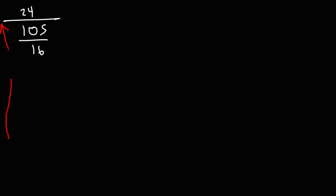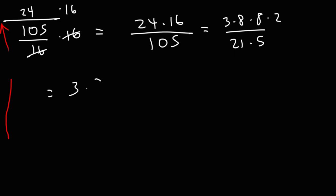So now we're at our last fraction. So we're going to multiply the top and bottom by 16. And so we have 24 times 16 over 105. Now 105, we can write that as 21 times 5. 24, I'm going to break that down into 3 times 8. And 16 is 8 times 2. Now 21, we can write that as 3 times 7.